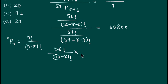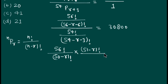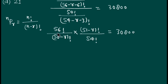Since this is a fraction in the denominator, we invert and multiply. For 54Pr+3, 54 minus 3 is 51, so it becomes (51 minus r) factorial divided by 54 factorial. This whole term equals 30800.